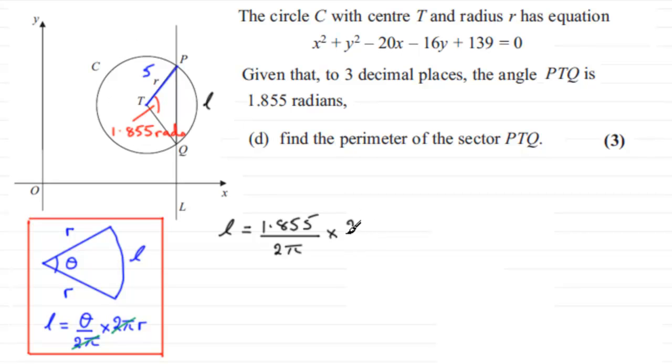The circumference is 2 times π times the radius, which in this case is 5. Those 2π's cancel one another out, so you're just left with the length of the arc equals the angle in radians times the radius. If you do that, you end up with 9.275.